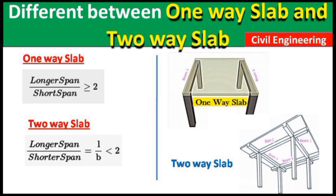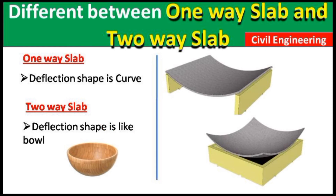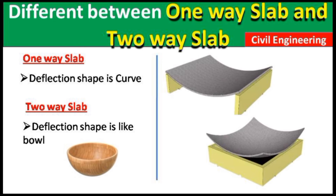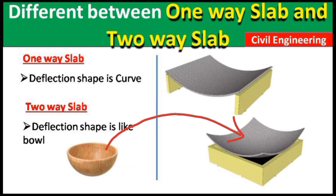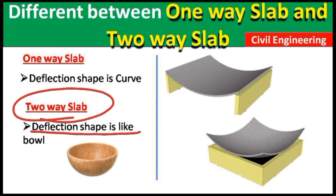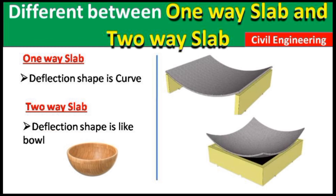Another difference is the deflection shape. In a one-way slab, the deflection shape is curved — it deflects like a curve in one direction. But in a two-way slab, it deflects like a bowl or ball shape, because bending occurs in both directions. These are the main differences between one-way slab and two-way slab.